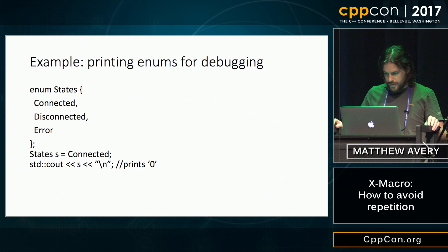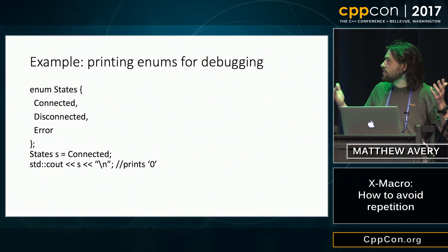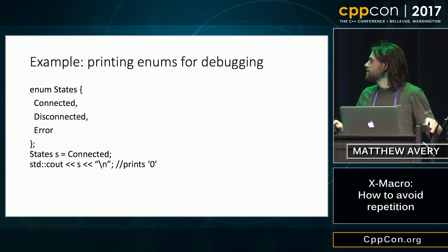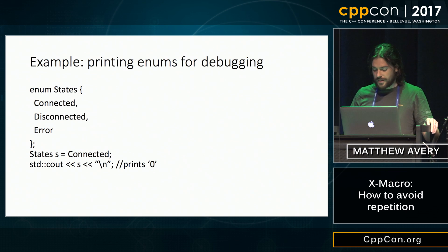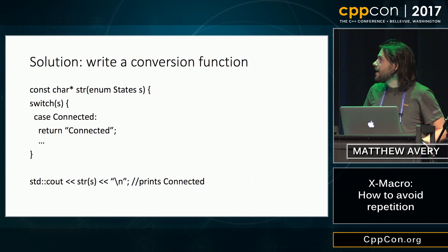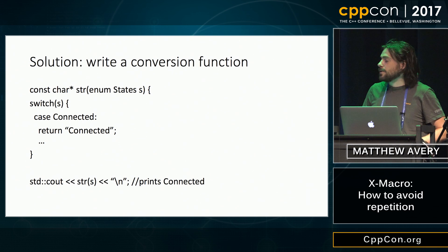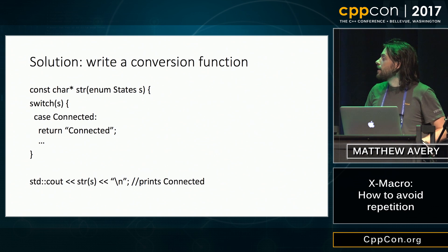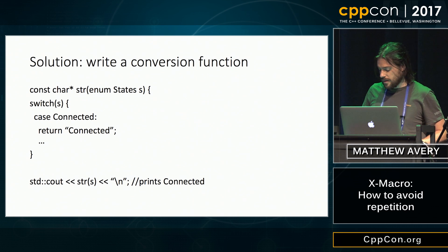So let's say you have an enum and you want to print out, for debugging or logging purposes, the string. Well, if you try to just write it to standard out, you're just going to get a number, because enums are ints. So in this case, you're just going to print zero. So what do you do? Well, you're going to have to write a function to do that for you. Typically, you'll have a switch with each element in the enum and you'll return a string for it. So now you can wrap that enum, call the function, and it'll print the string.